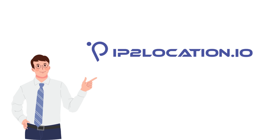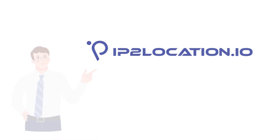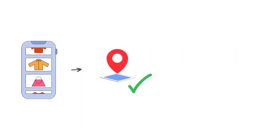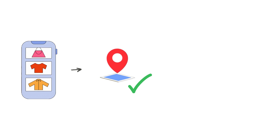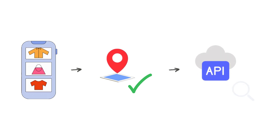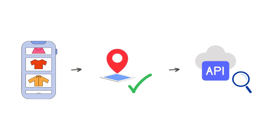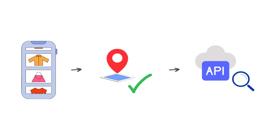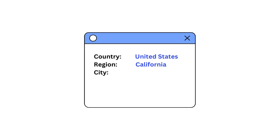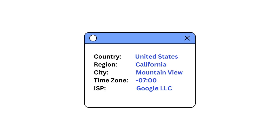Imagine harnessing the power of location data to transform your business. When a user visits your website, their IP address will be captured. In milliseconds, the API processes the request and returns detailed location data. This data includes country, region, city, timezone, ISP, and much more.